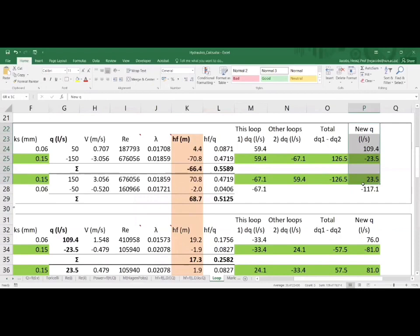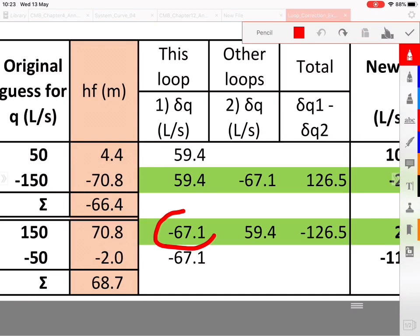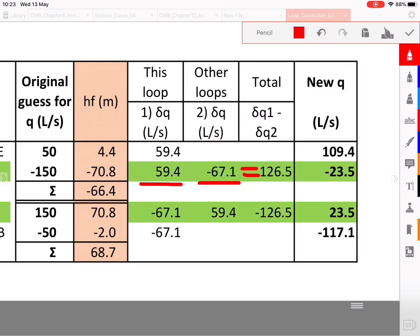Let's do a quick revision of the correction calculation. The correction factor already includes the negative sign, so don't let this confuse you. With the shared pipe, transfer the two values from this loop and other loops and then you'd take the one correction factor minus the other one.